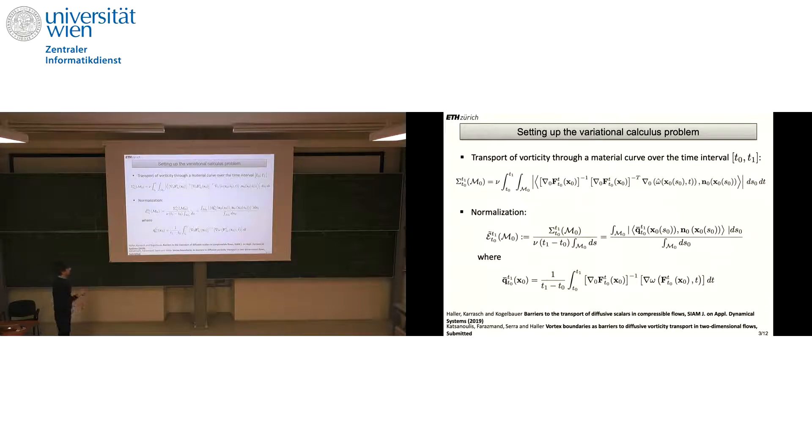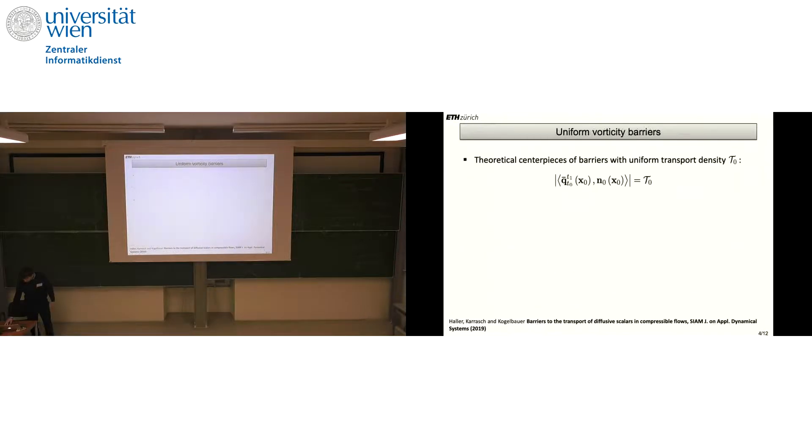This is a functional for the yet unknown curve M₀ that we're looking for. Material curves that extremize this functional will have initial positions for which the variational derivative vanishes.